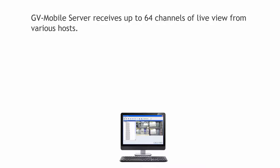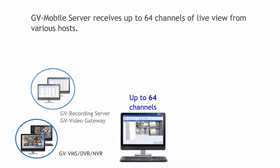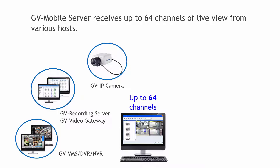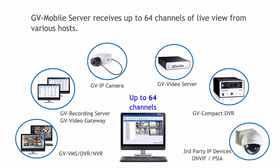The mobile server receives up to 64 channels of live view from various hosts, including GV VMS, DVR and NVR, GV Recording Server, GV Video Gateway, GV IP Cameras, GV Video Server, GV Compact DVR, and third-party IP devices.